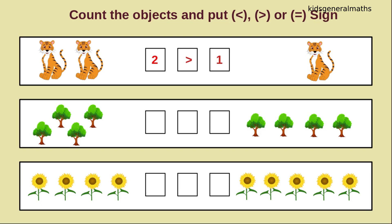Next we are going to count the next object. One, two, three, four. How many trees? Four trees. One, two, three, four. How many trees? Four trees. While comparing these two numbers, both the numbers are the same. So what sign are we going to put now? If both numbers are the same, we are going to put equal. So we will say four is equal to four.